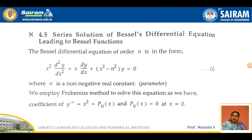Now, with the help of the Frobenius method, we will do the derivation of Bessel's differential equation and find its series solution. We have to consider the Bessel differential equation of order n, which is of the form: x² d²y/dx² + x dy/dx + (x² − n²) y = 0. Take this as equation number 1, where n represents a non-negative real constant.